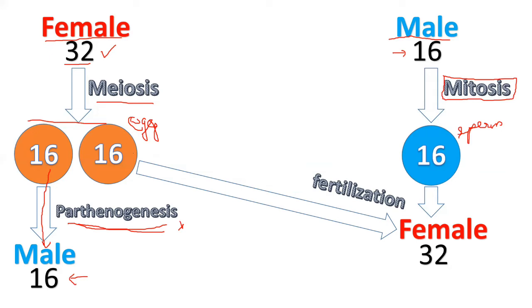But what if the egg is fertilized? When the egg and sperm undergo fertilization, the number of chromosomes becomes 16 plus 16, giving 32 chromosomes, and a female offspring is formed. Females are formed when there are 32 chromosomes — two sets. So 16 chromosomes from the egg and 16 from the sperm combine to form the female. Females are formed as a result of fertilization, while males are formed as a result of parthenogenesis with no fertilization.